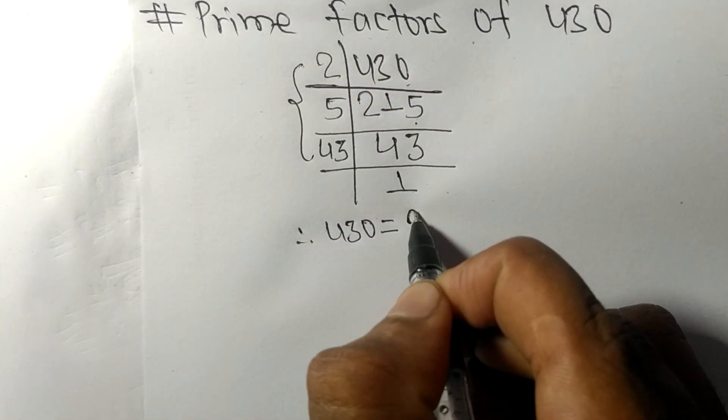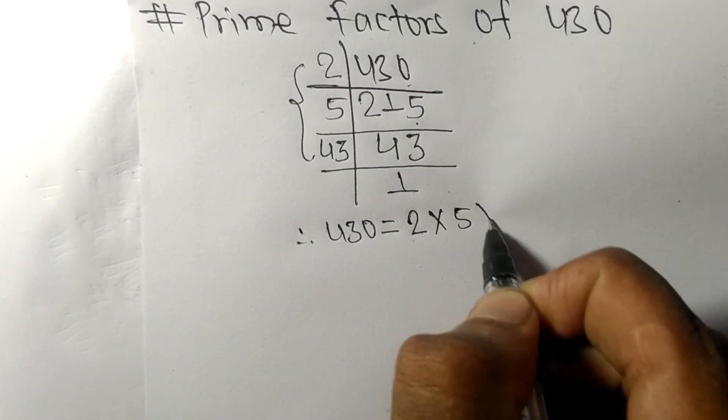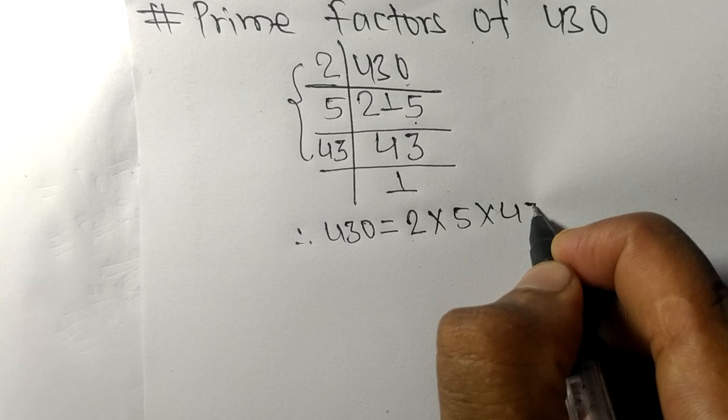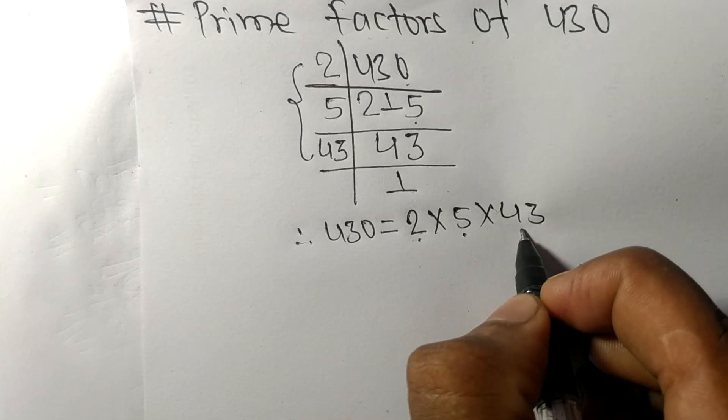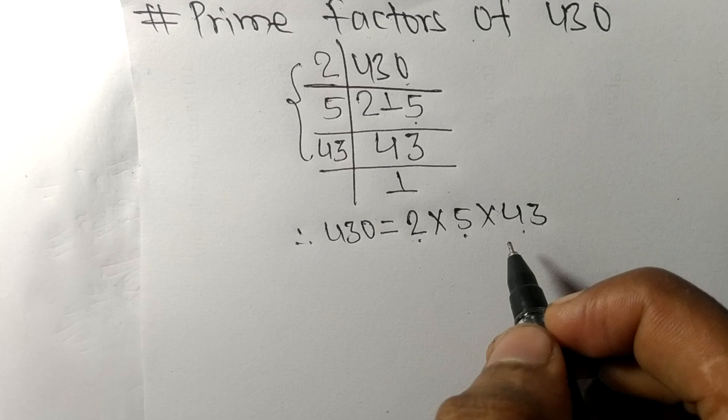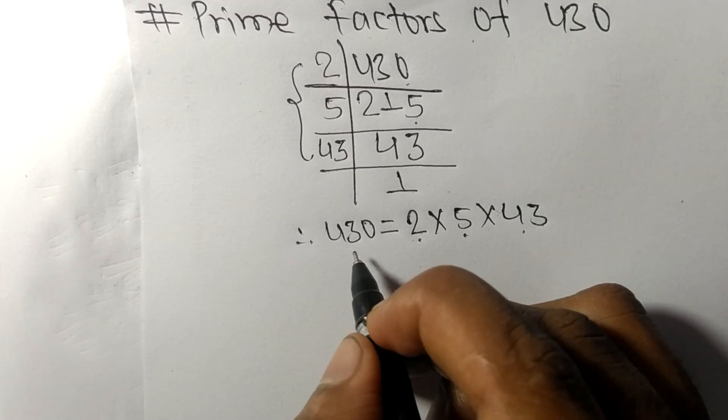From this side it is 2 times 5 times 43. So 2, 5, and 43 are the prime factors of 430.